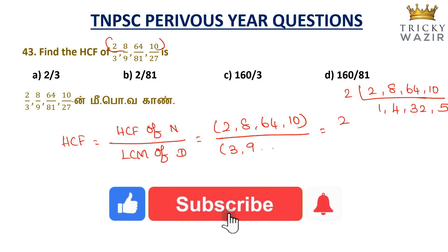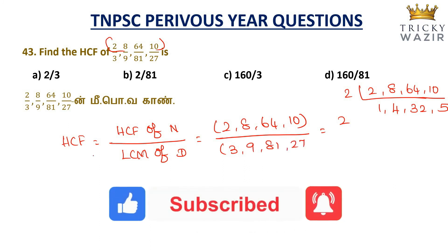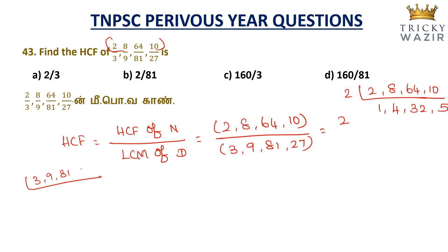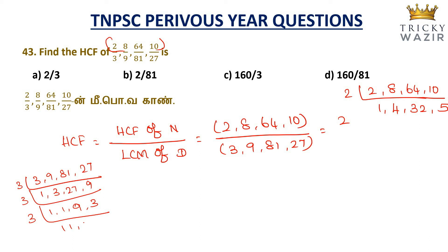The denominators are 3, 9, 81, 27. To find their LCM, we use factor tables: 3, 9, 81, 27 break down as powers of 3. The LCM of the denominators is 81. So HCF of the fractions equals 2 by 81.